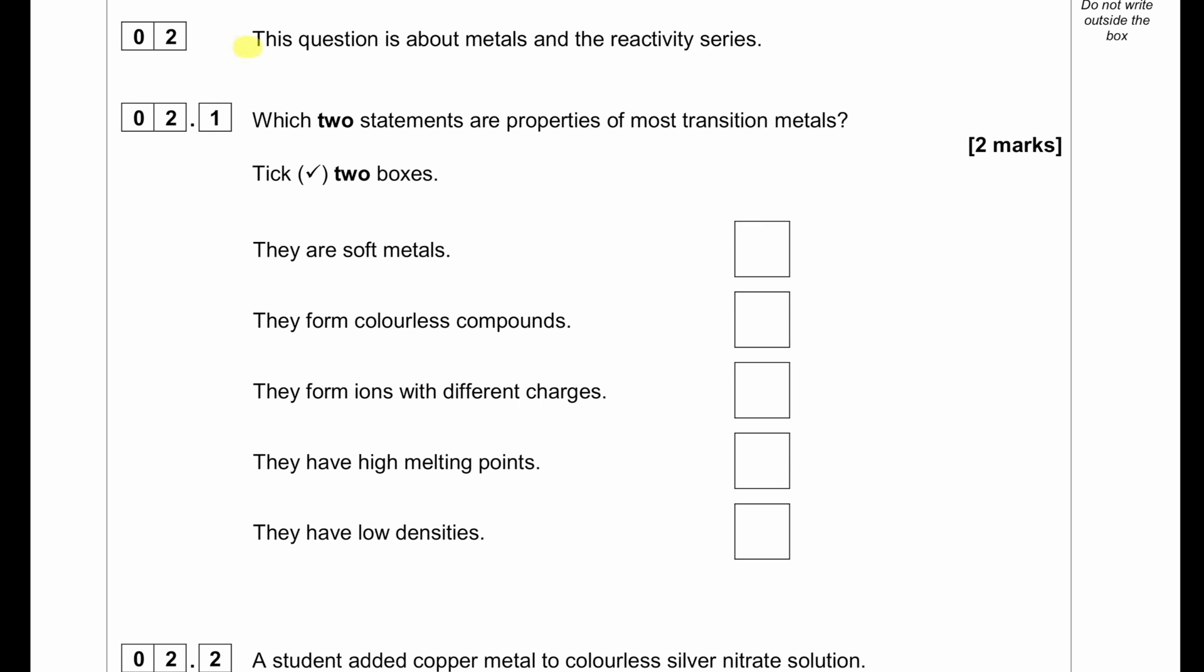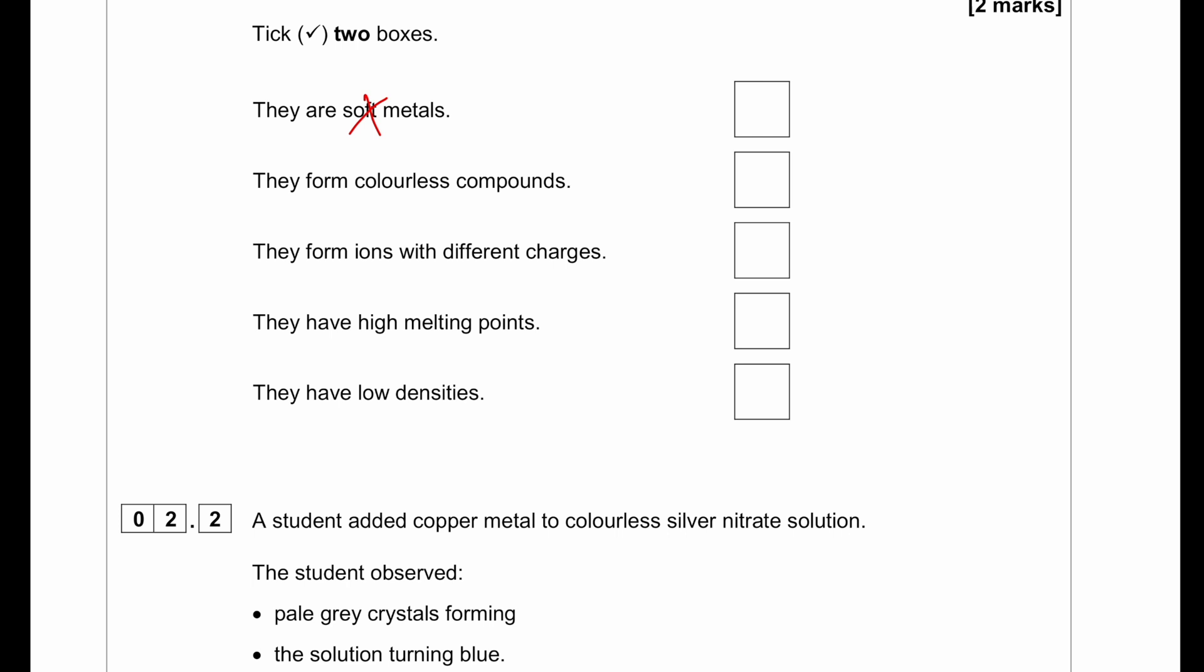This question is about metals and the reactivity series. Which two statements are properties of most transition metals? Transition metals are not soft. They form colorful compounds. They form ions with different charges - this is correct. They have high melting points - correct. Transition metals have high densities.